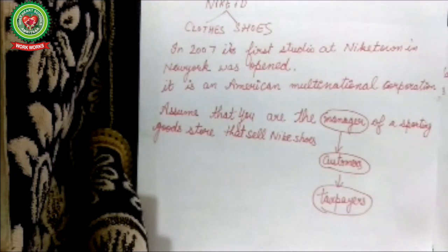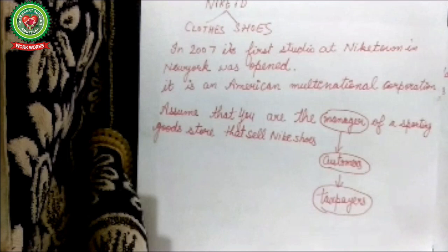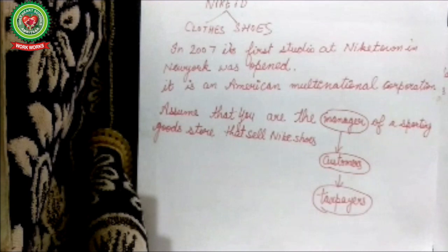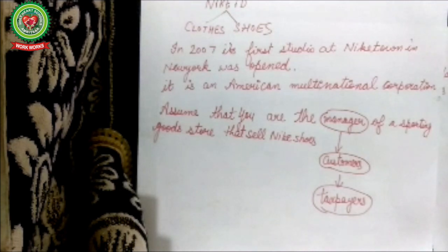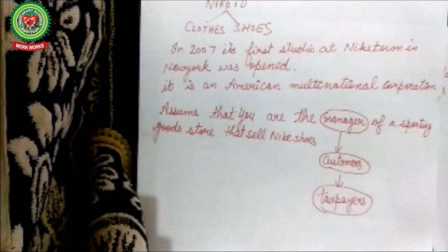Suppose you are the manager of a sporting goods store that sells Nike shoes. In your day-to-day operations, you interact with customers, taxpayers, suppliers, competitors, investors, internal auditors, government bodies, and the general public. All those with whom you interact as a manager are called users of accounting information — they are interested in your business.